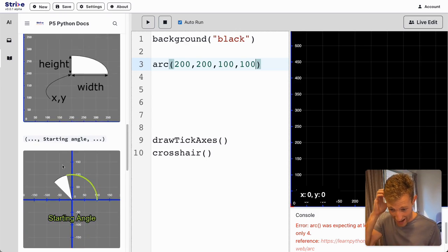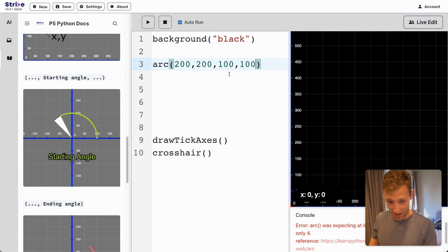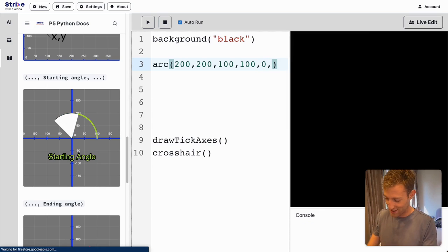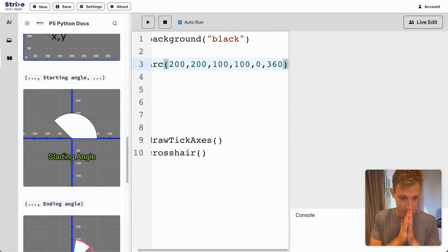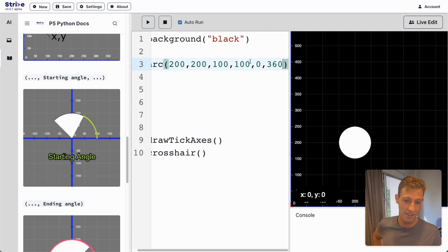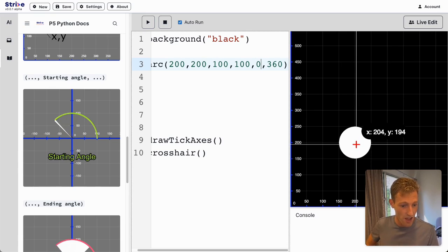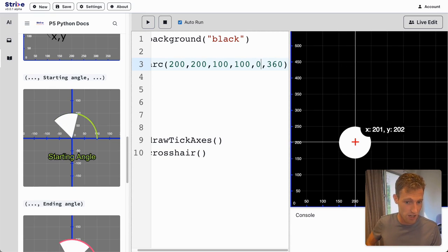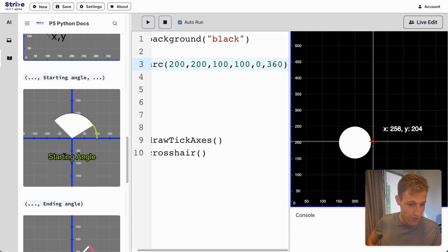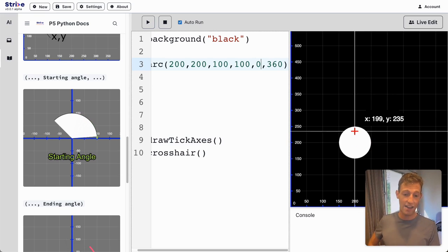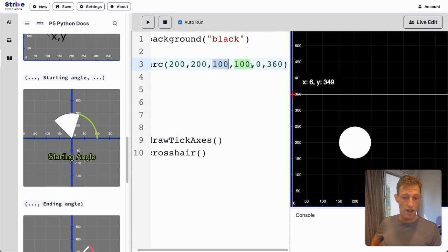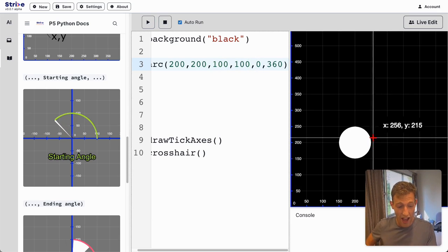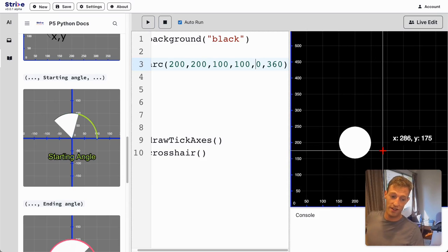So that'll be the arc, but now from where to where? So these angles, I believe, are in degrees. Let's please be in degrees. So let's say 0 to 360. Yes, okay, so I'll get a full circle. Okay, so if I say 0 to 360, what I'm saying is start from x200, y200, go 100 out to the right and 100 up to the top, start at angle 0, and then go all the way around because they're 360 degrees in a circle.